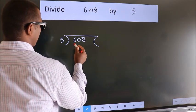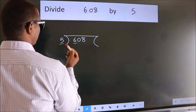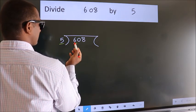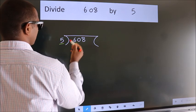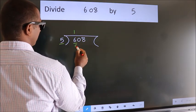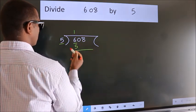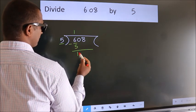Here we have 6, here 5. A number close to 6 in the 5 table is 5 once 5. Now we should subtract. We get 1.